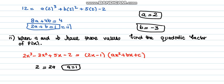So our next step is to compare the constants. The constant over here is -2, and the constant over here is -c. So that would become c equals 1.